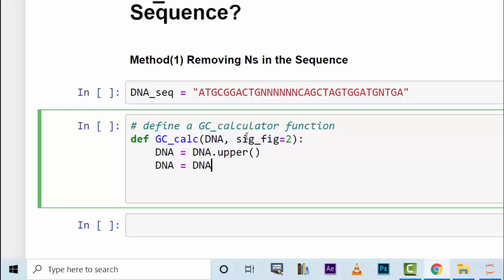Then we do the removal. DNA equals DNA.replace N to empty string. This gets rid of every occurrence of N's in your DNA sequence.